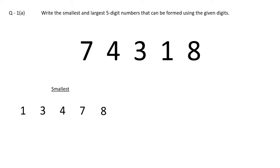Now let's make the largest five-digit number. The rule is just the opposite — we have to pick the largest digit first. The largest digit given is 8, then after we pick 7, then 4, then 3, then 1. So the largest number formed is 87,431.